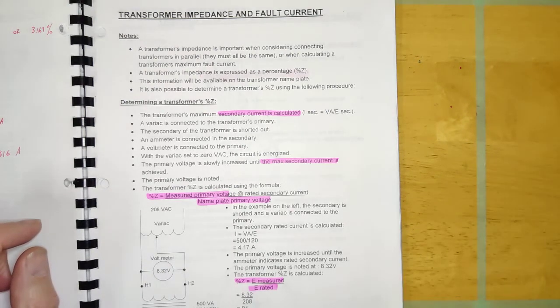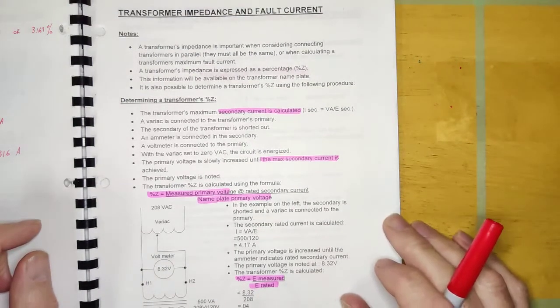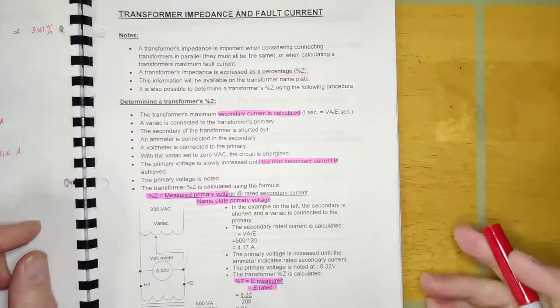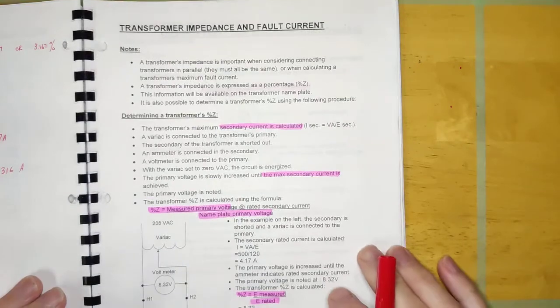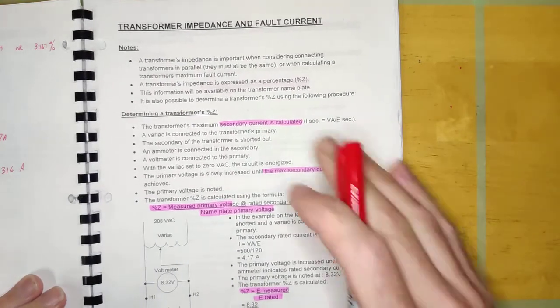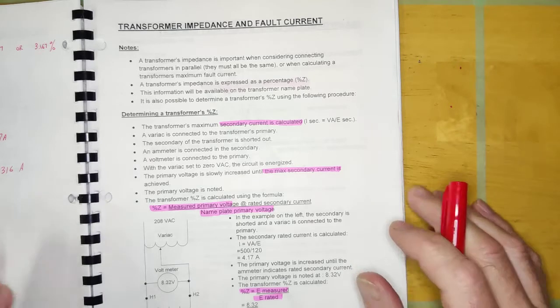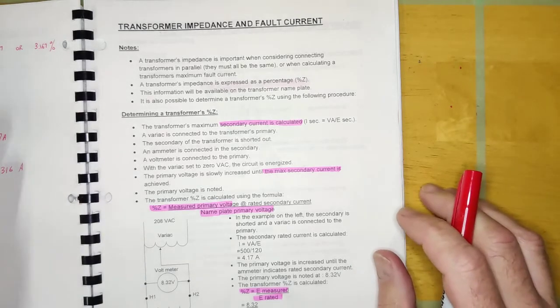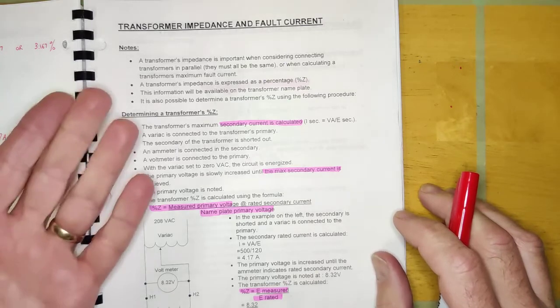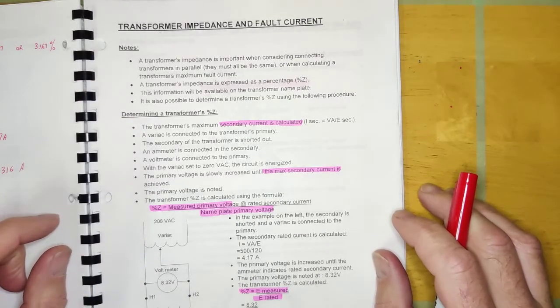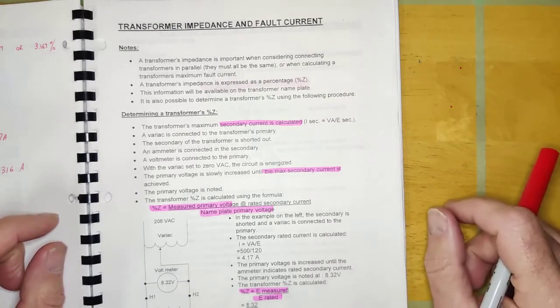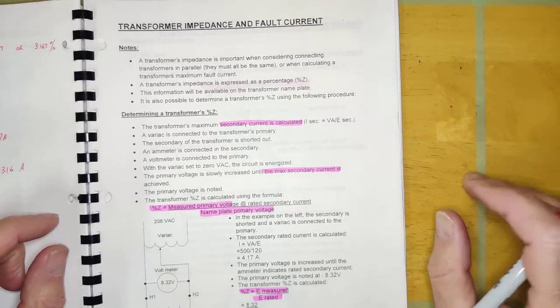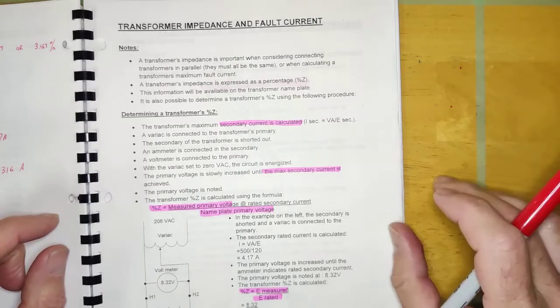Hey guys, welcome back. We're going to spend a few minutes on making sure you're able to calculate transformer impedance and transformer fault current. The transformer percent impedance is going to be on the transformer nameplate, so the chances of you ever having to calculate it in real life are very slim. However, there's a chance you might have to calculate it on the CFQ or something like that, so I'm going to go over it really quickly.